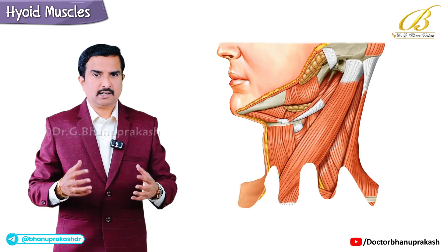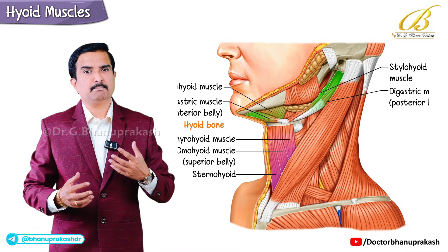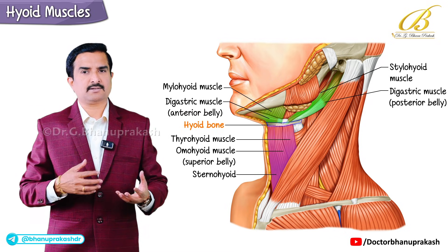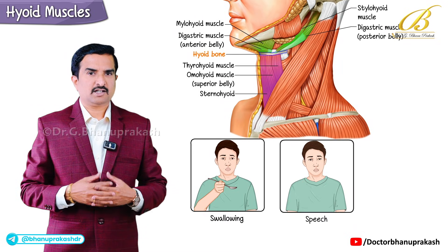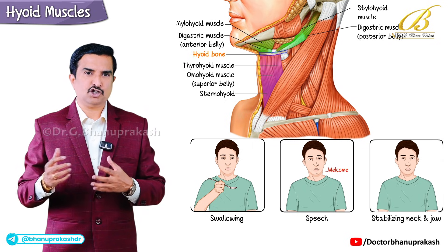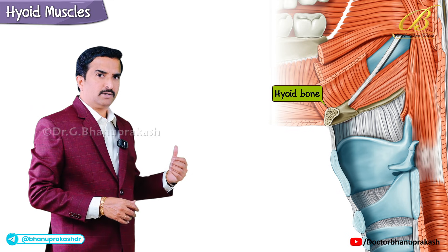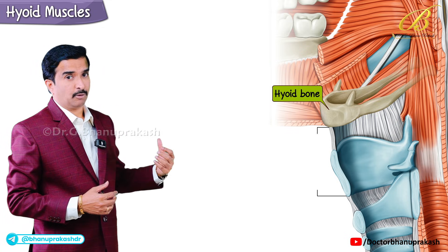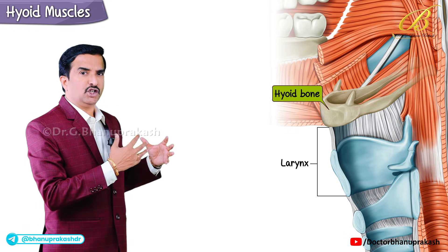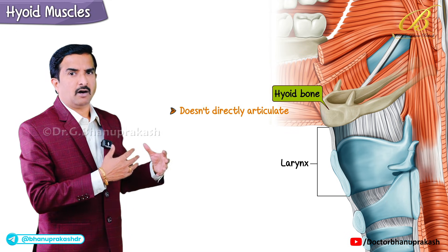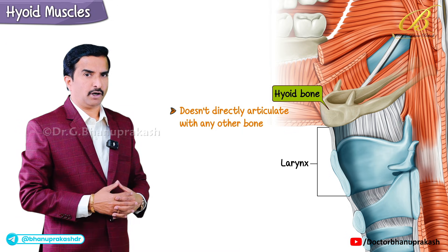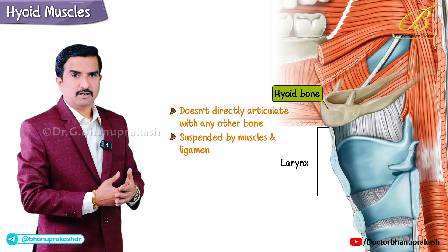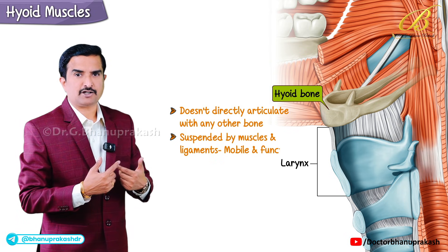Hello everyone, let's take a closer look at the hyoid bone and the muscles connected to it. This topic is really important because these structures play a central role in swallowing, speech, and stabilizing the neck and jaw. As you can see here, the hyoid bone is a U-shaped bone located in the anterior neck just above the larynx. What makes it unique is that it doesn't directly articulate with any other bone in the body. Instead, it is suspended by muscles and ligaments, which makes it highly mobile and functionally significant.